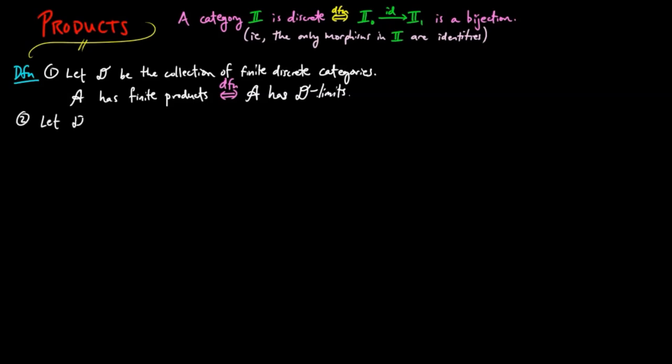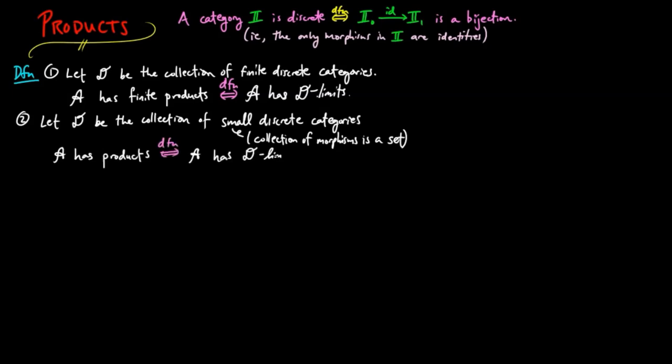Similarly, two: let D be a collection of small discrete categories. Then A has products provided A has D limits.